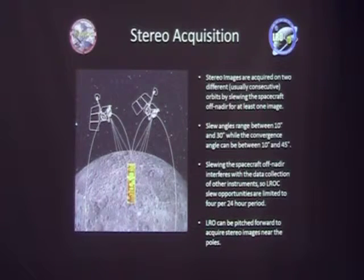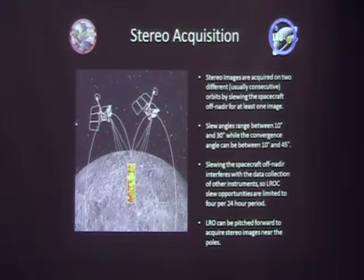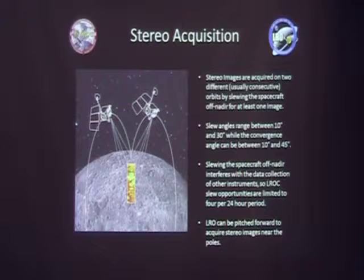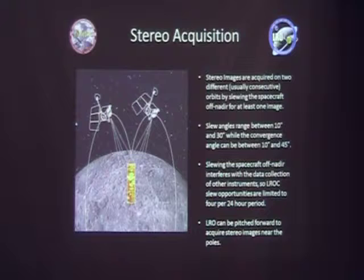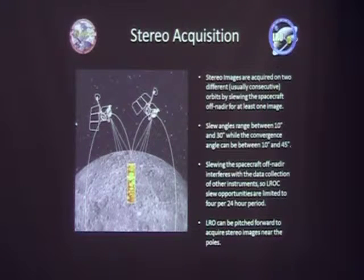This is a diagram of how we acquire the stereo images. Usually we acquire them over two separate orbits, preferably two consecutive orbits, which helps preserve the lighting. Usually we get a slew angle between 10 and 30 degrees with a convergence angle between the two images of 10 to 45 degrees. Usually the larger the convergence angle, the better the result. The spacecraft slewing does interfere with other spacecraft operations, so we're limited to about four slews every 24 hours — and that's not just for stereo images — so we have to make our images count.